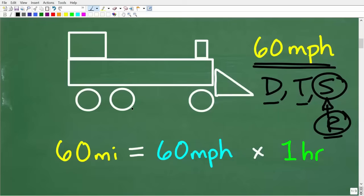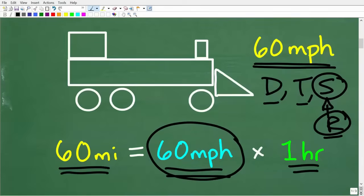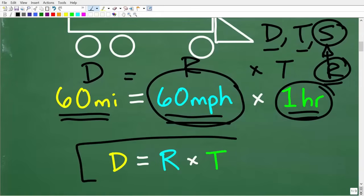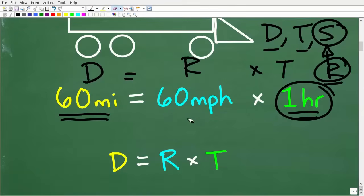Well, it means the train is going to go 60 miles per every one hour. So it's going to go 60 miles in one hour. So the relationship here is if we take our rate, our speed here, and multiply it by the time, that will give us the distance.